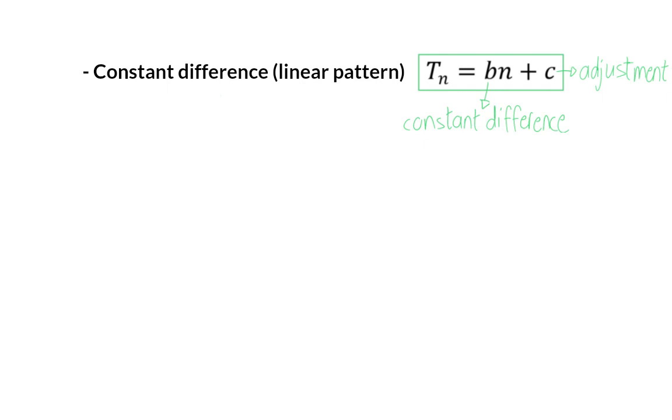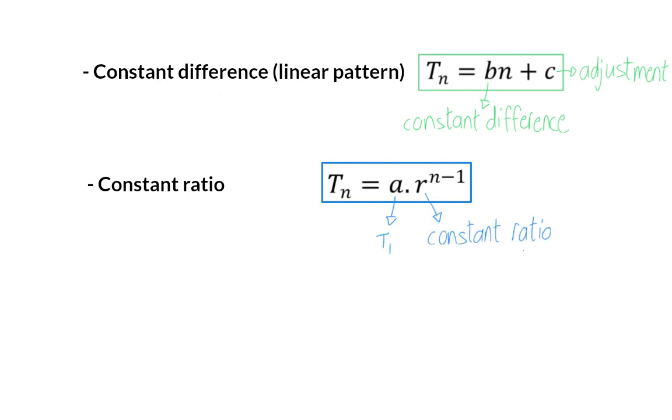So to summarize, firstly a pattern can have a constant difference and then the general rule will be in the form Tn is bn plus c. Or there can be a constant ratio. Then the general rule is in the form a or our first term multiplied by the constant ratio to the power of n minus 1. And then there are many different patterns that have a relationship between the position and the value.